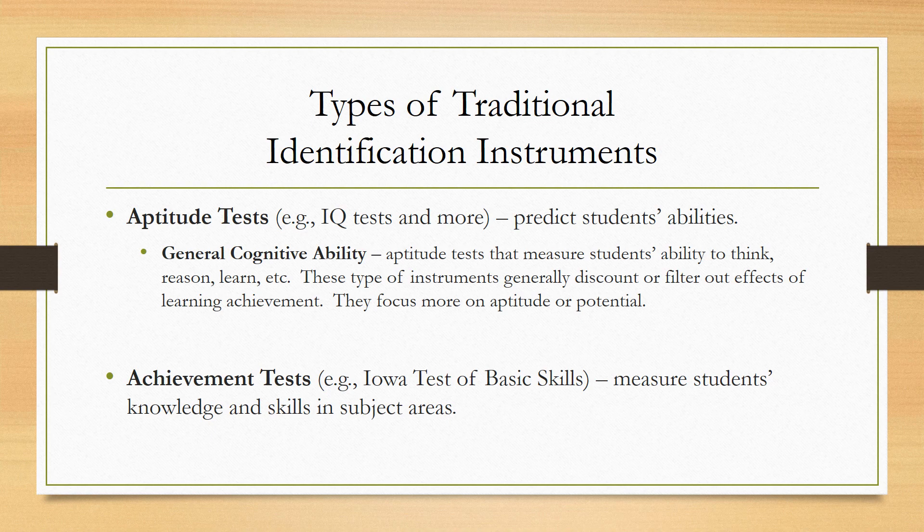In addition to those categories, there are two other categories to understand: aptitude tests and achievement tests. Aptitude tests predict students' abilities and try to uncover student potential. An IQ test is an aptitude test because it's trying to figure out your abilities — for example, to mentally rotate objects — not your memorization of the state capitals.